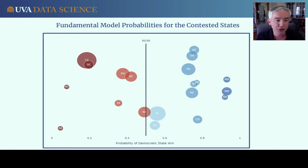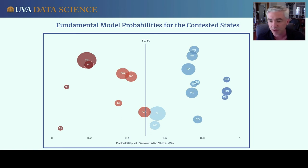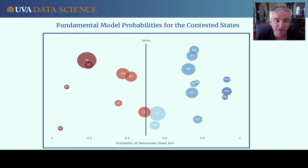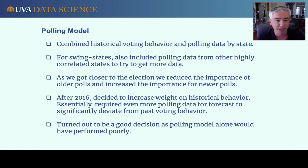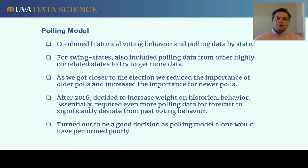The fundamentals model predictions showed Georgia right on the line, Florida pretty close, and Arizona approximately correct. In the future, fundamentals models may have more influence. The other component of the proprietary model was a polling-based model, which Spencer then discussed.